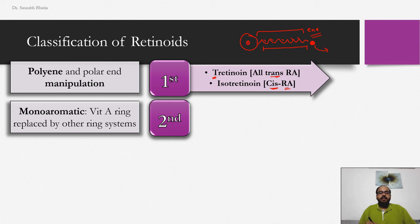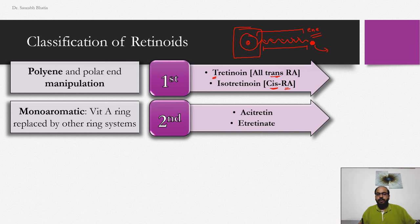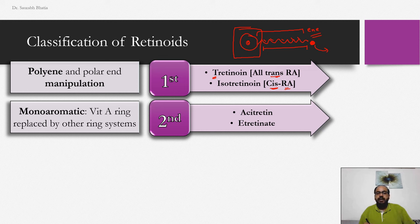The second class is monoaromatic — the vitamin A ring is replaced by other ring systems. This second class includes acetretin and etretinate. These are known as aromatic retinoids or monoaromatic because only one ring is added, and they are better suited for psoriasis.